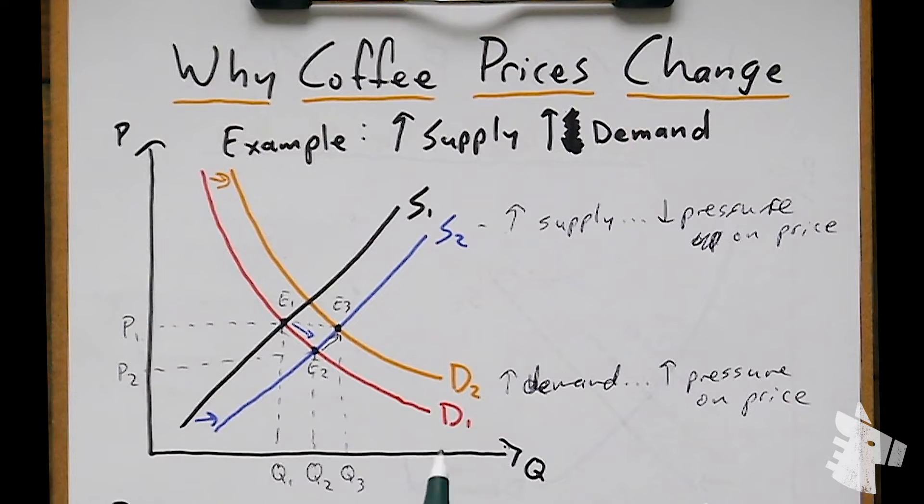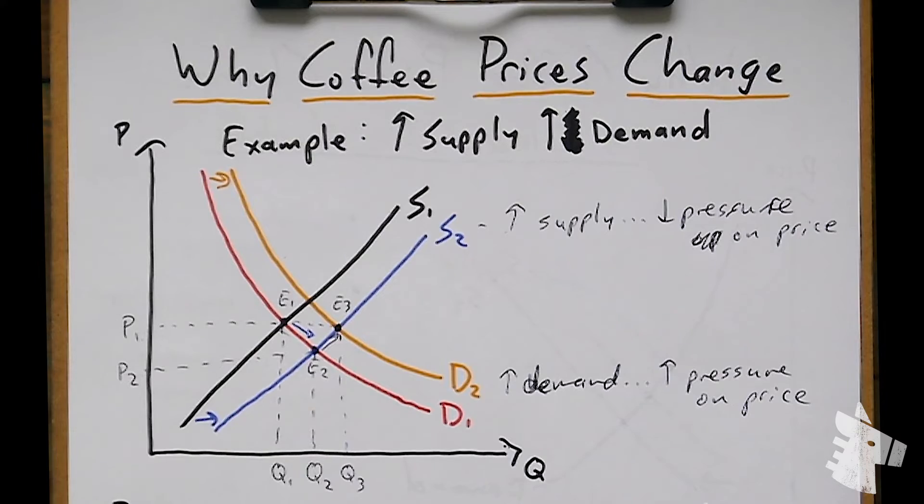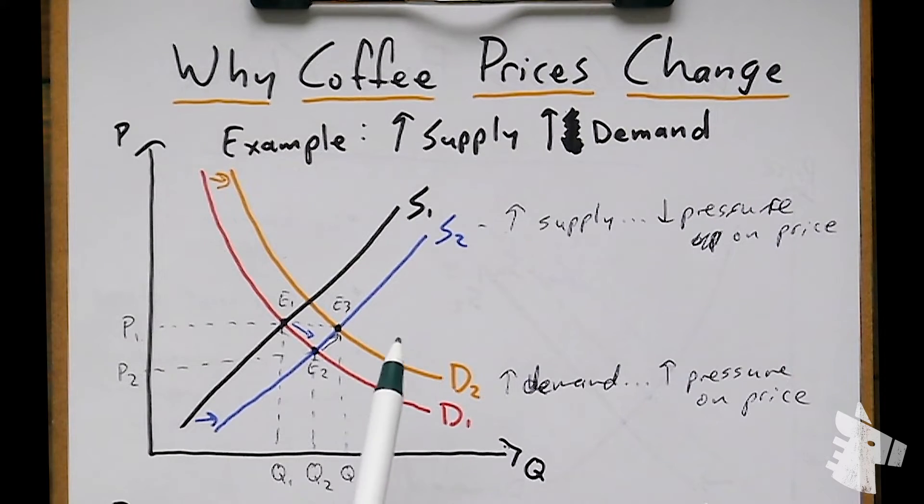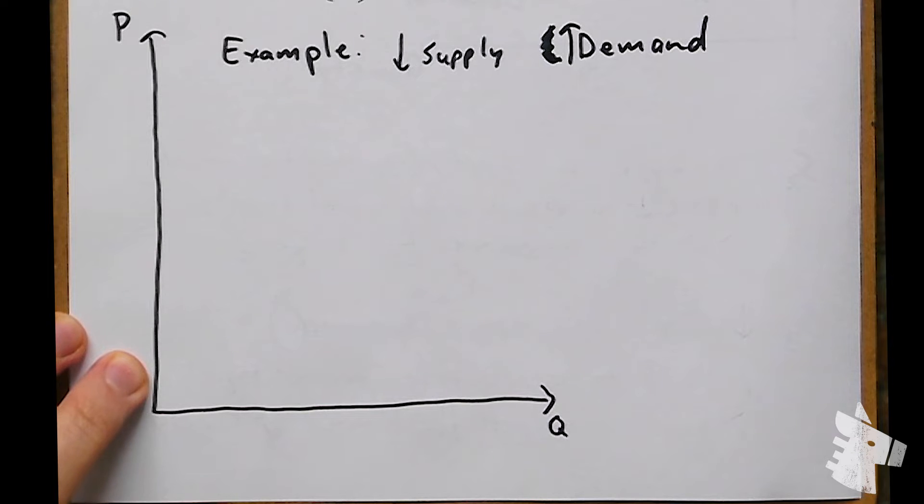Of course, it's rare that these changes of supply and demand will cause the price to remain exactly where it was before. But this example is just intended to show that there are likely many forces at work at any given time applying upward as well as downward pressure on supply as well as demand. Neither of the two are ever going to be completely constant. In an open, efficient market like green coffee, it would be rare for either supply or demand to ever be constant.